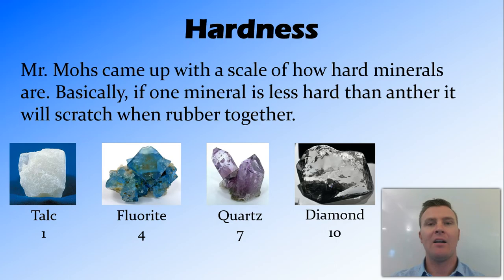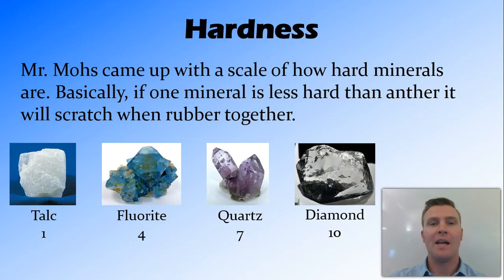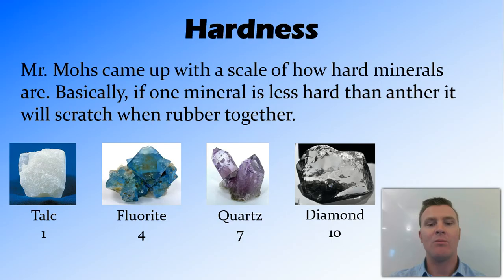Another good way of identifying a mineral is its hardness. Mr Mohs came up with the Mohs scale for how hard different minerals are. It goes from talc at 1, which you can scratch with your fingernail, and diamond at 10, which you can't scratch with anything.